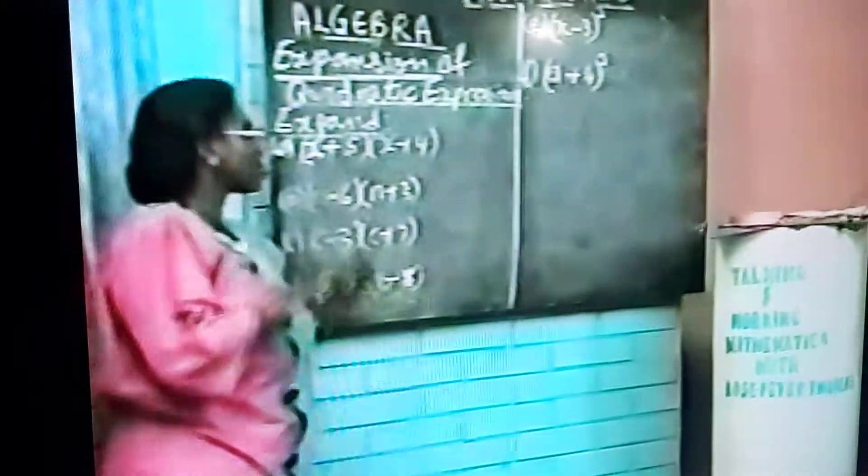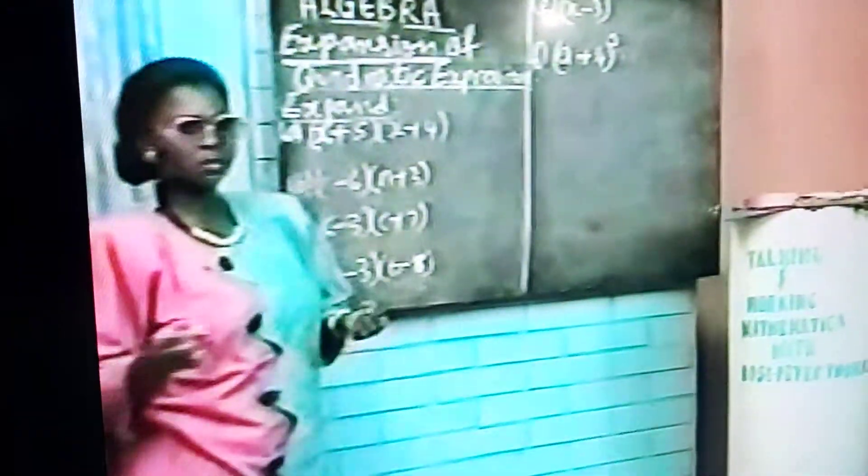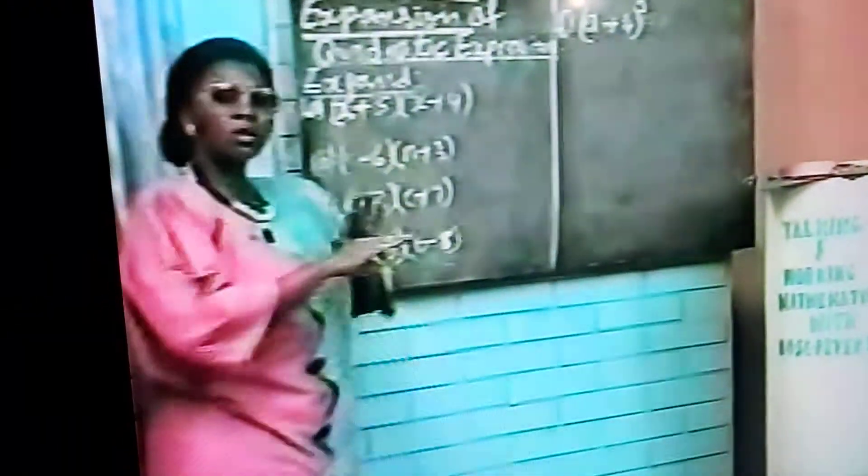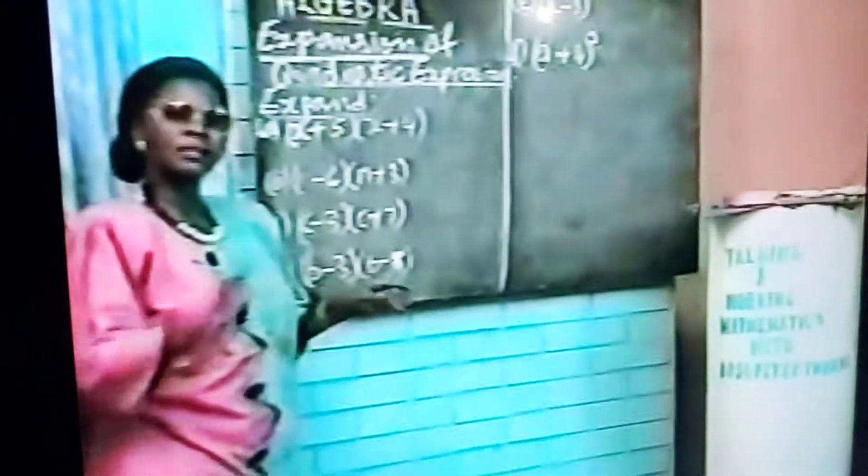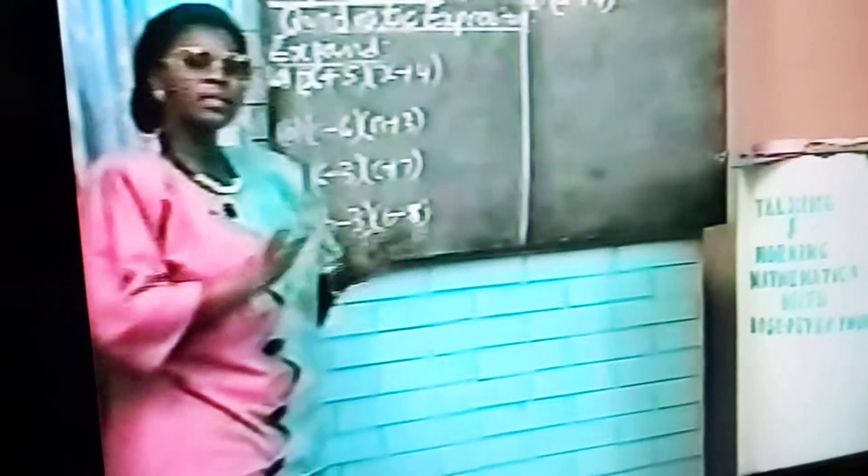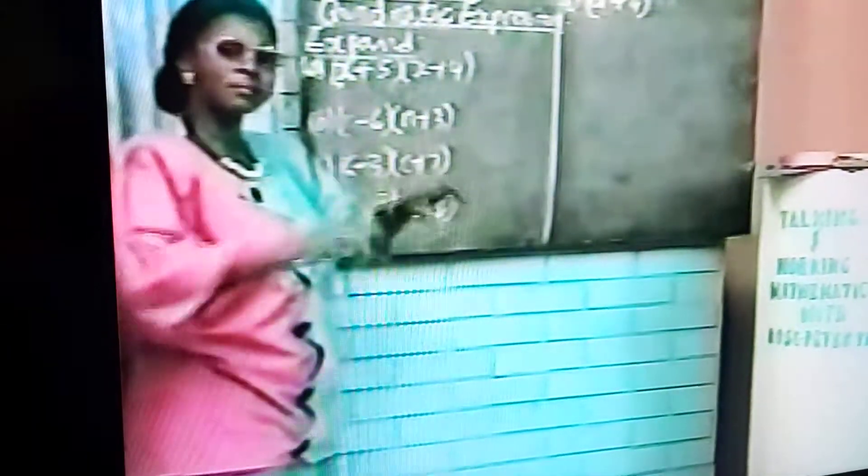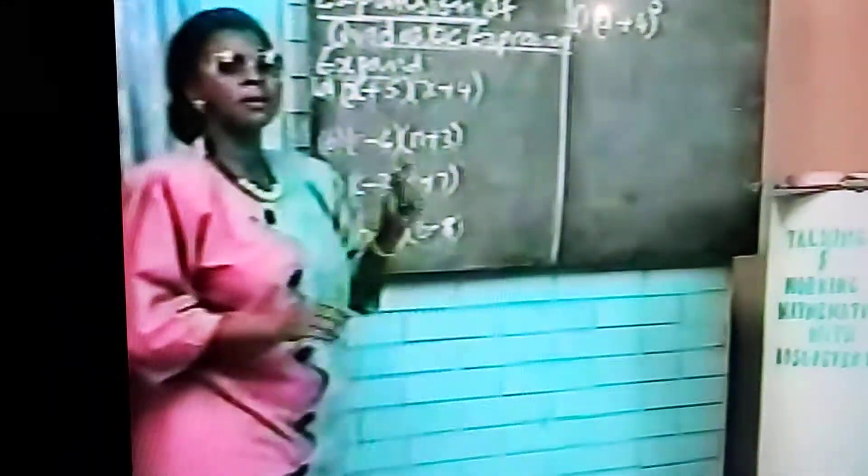When we were discussing linear equations, I told you none of the letters have any power except power 1. They are all linear. But in quadratic, the word quadratic simply means something raised to power 2, that is an expression in which the highest power that exists is 2.